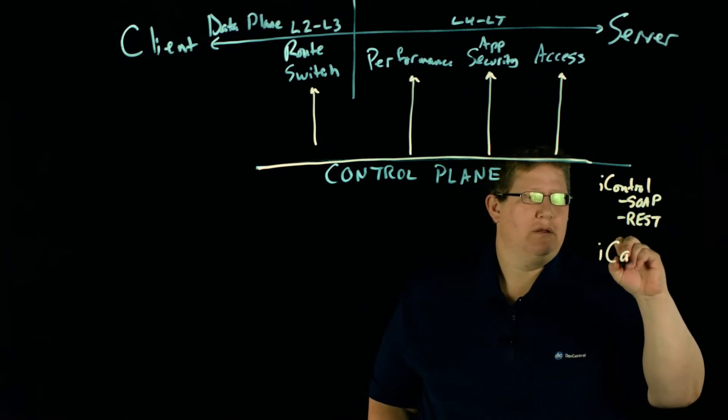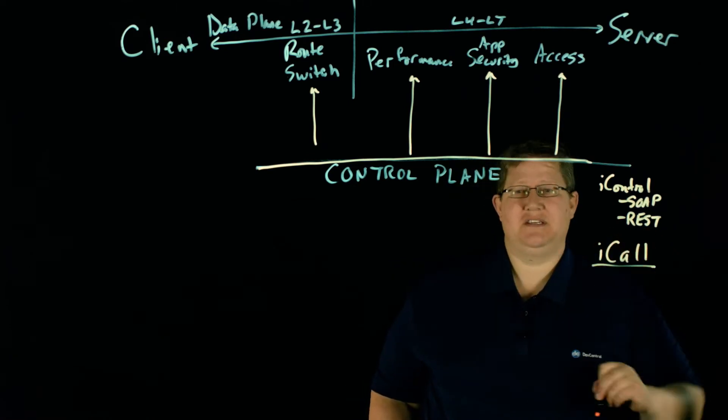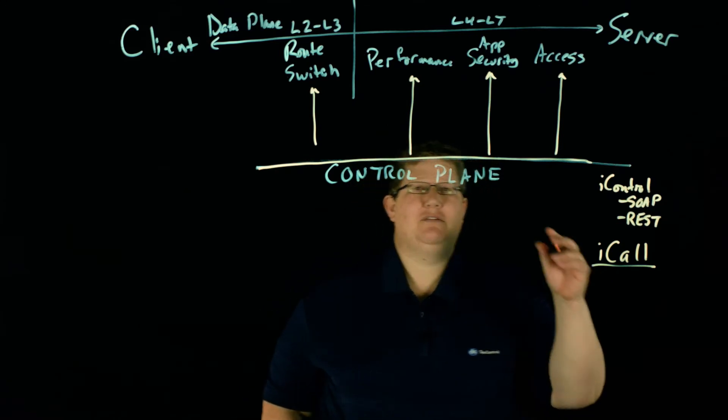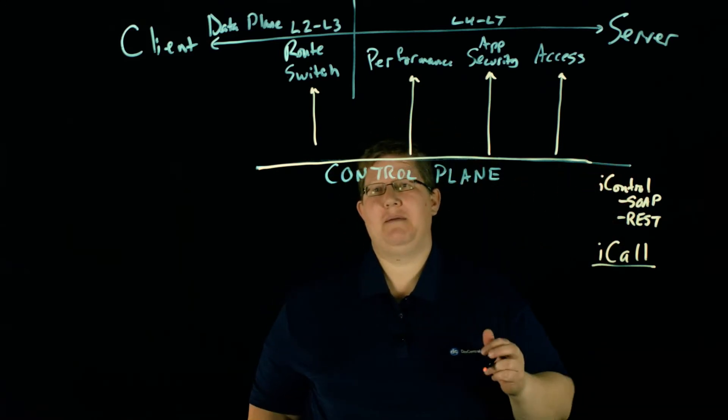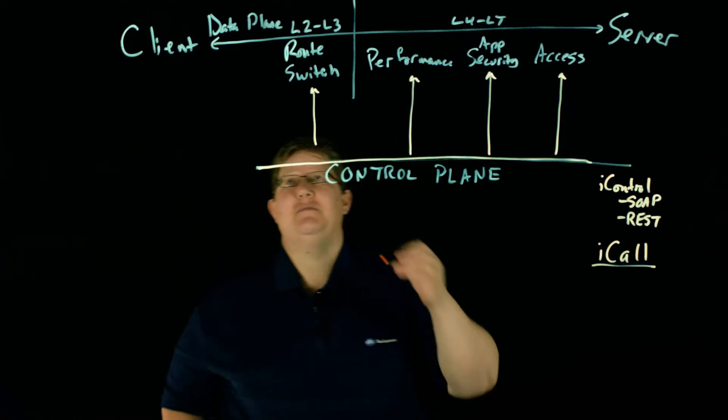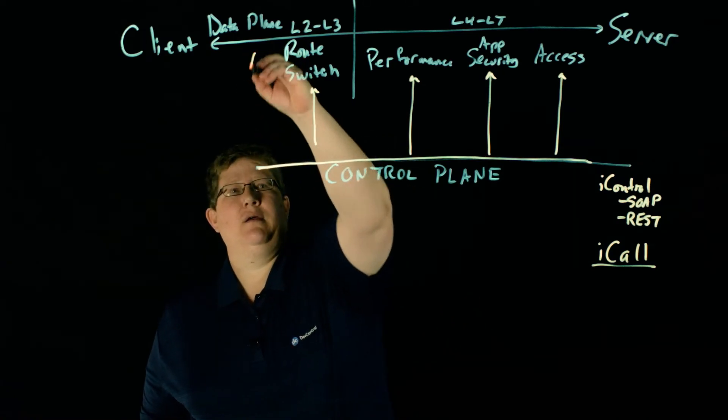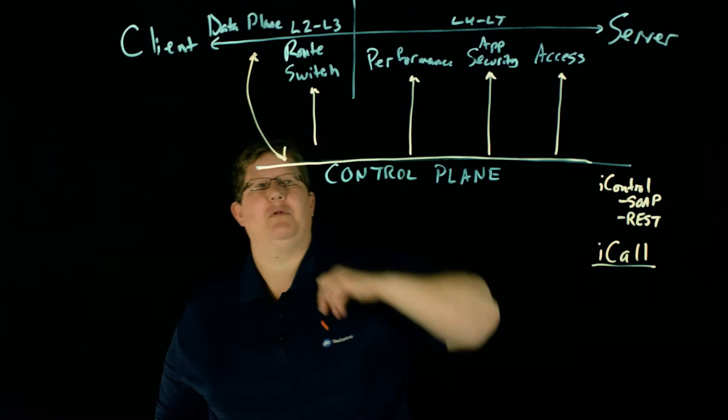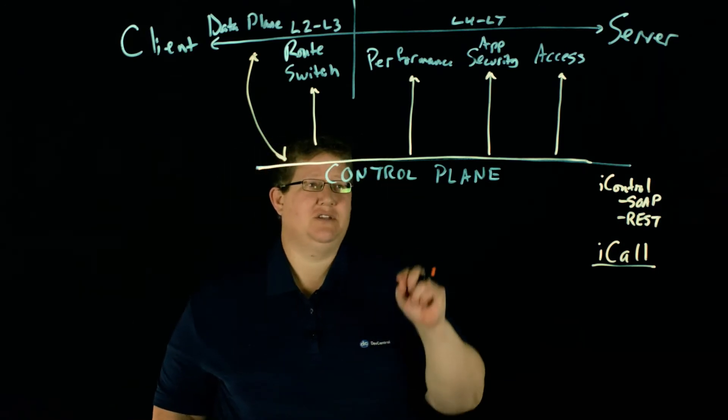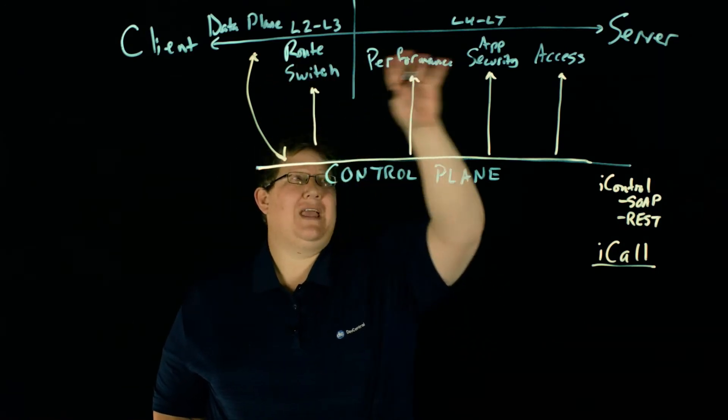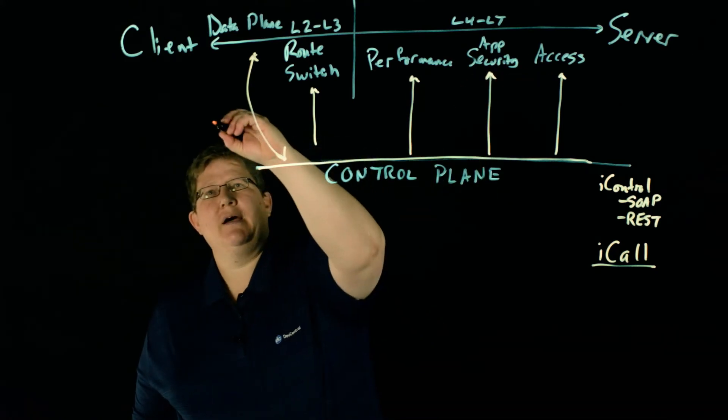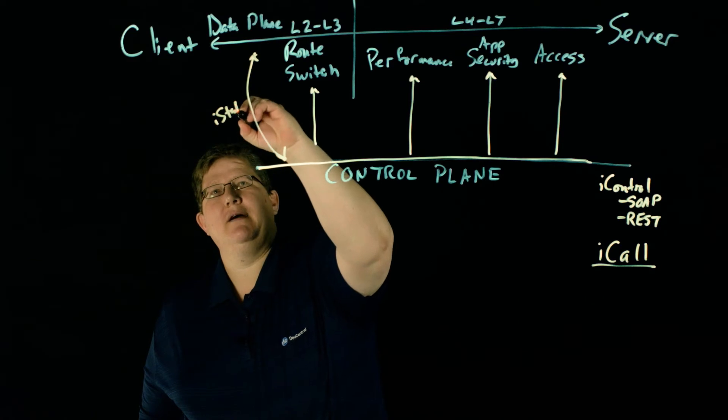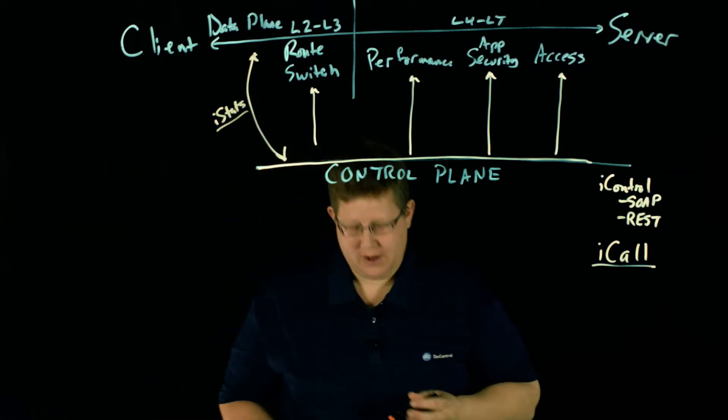But iCall is a built-in system on BIG-IP that allows you to do much the same, but it's closer, it's on BIG-IP, but there's also an interaction between your data plane and your control plane. So you can make decisions on your data plane from the control plane. And the mechanism to pass data between the two is iStats and your iRules.